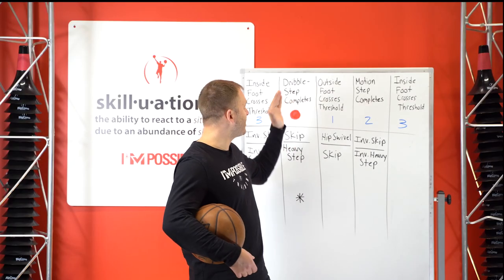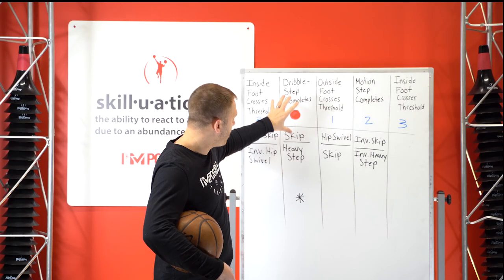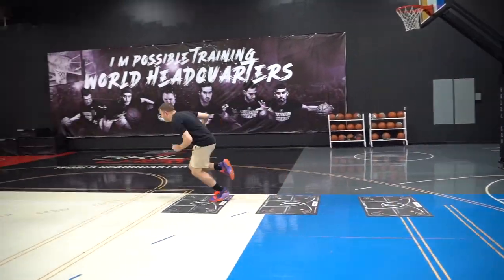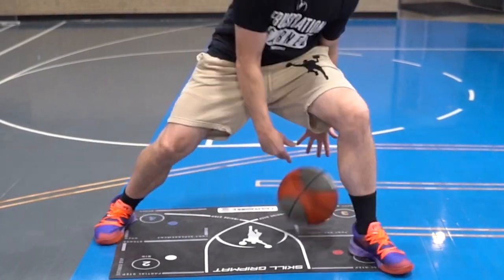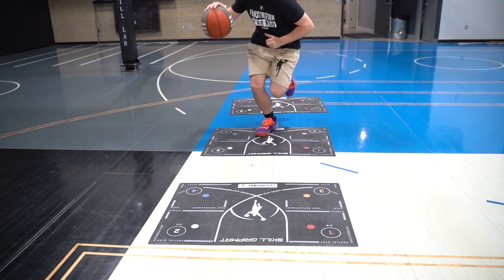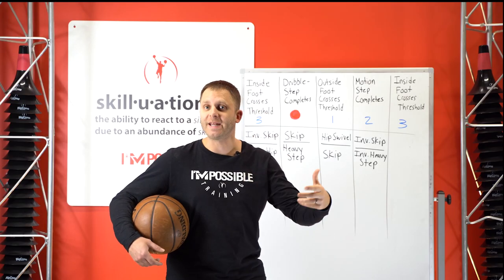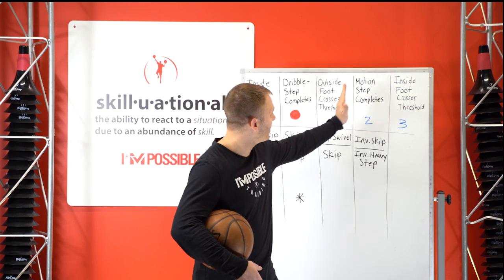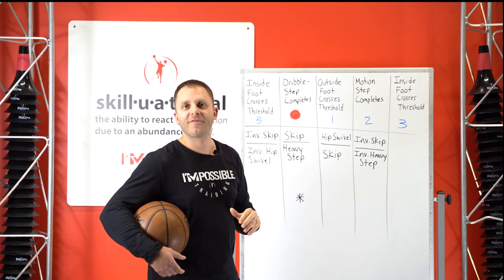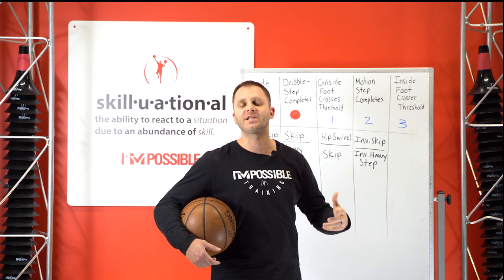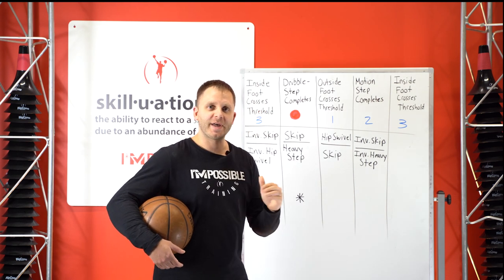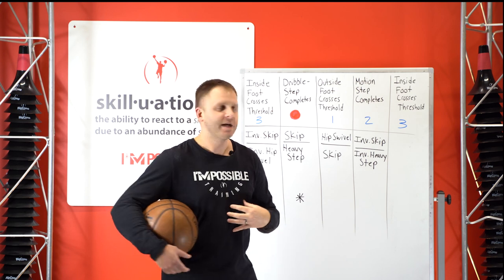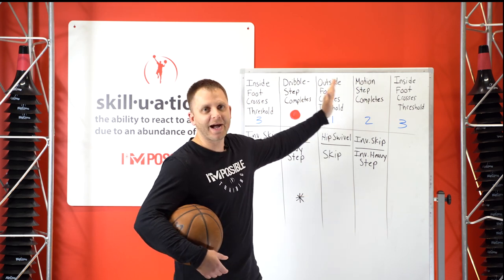When you really study dribble steps, this is where you find most players make all their reads — right here at the dribble step. If you're the type of player who only makes reads here, it means you have to wait all the way until your next dribble step to read and react again. What happens to a lot of players who don't have the ability to read and react in these other moments is turnovers, or they simply can't make the right play. That's why we want the ability baked into our body and skills to react in any of these pockets of time.